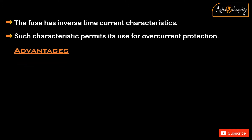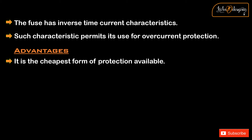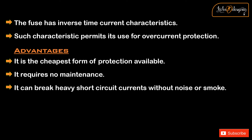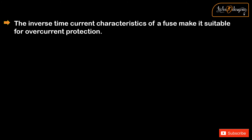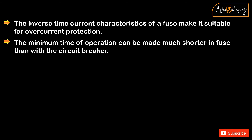Advantages. It is the cheapest form of protection available. It requires no maintenance. It can break heavy short circuit currents without noise or smoke. The smaller size of the fuse element imposes a current limiting effect under short circuit conditions. The inverse time current characteristics of a fuse make it suitable for over-current protection. The minimum time of operation can be made much shorter than with a circuit breaker.